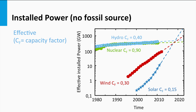Nuclear has the highest capacity factor at around 90%, followed by hydropower at around 40%. For wind energy an average capacity factor of 30% is assumed, and for solar a capacity factor of 15%. The low capacity factor for PV systems is explained by the fact that for most geographical locations, almost half of the solar day is devoid of solar radiation at night time. Using these capacity factors, we can assess the effective installed power of each electricity source. Currently, solar energy generates an order of magnitude less electricity than hydro and nuclear.